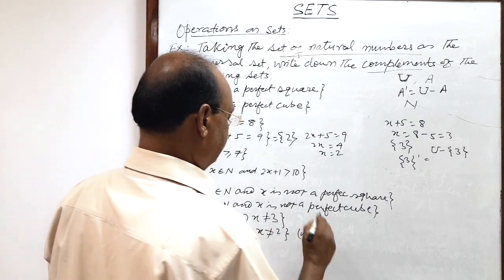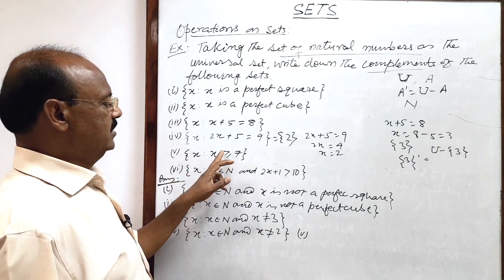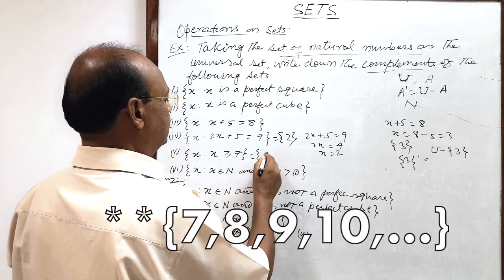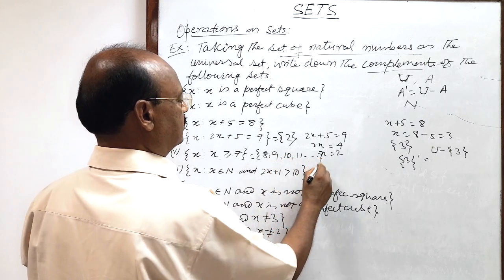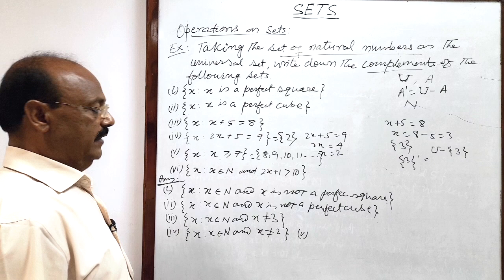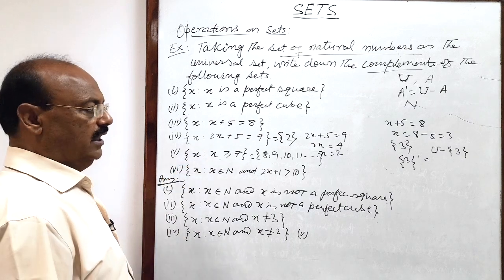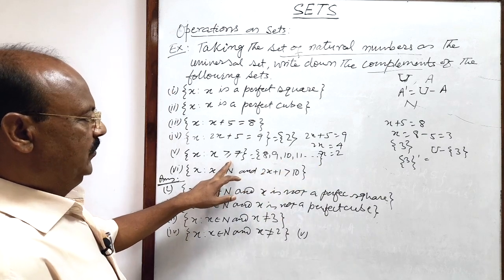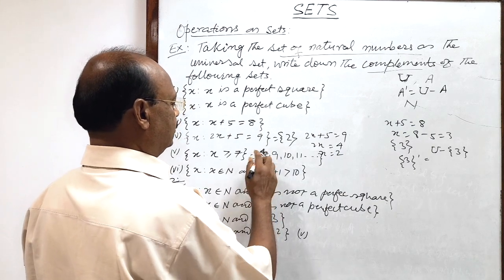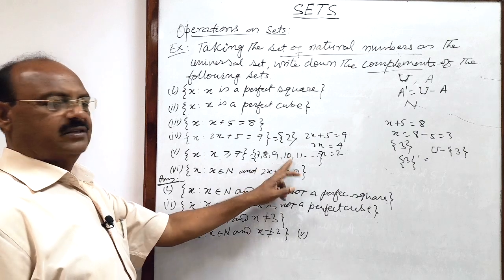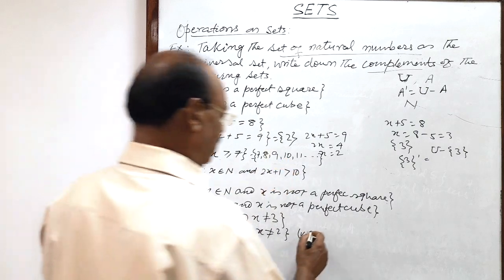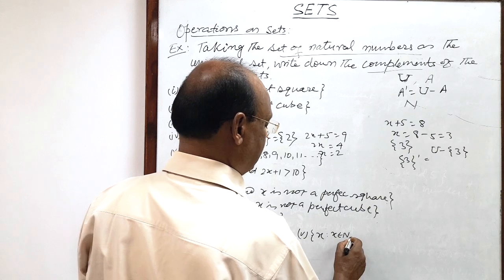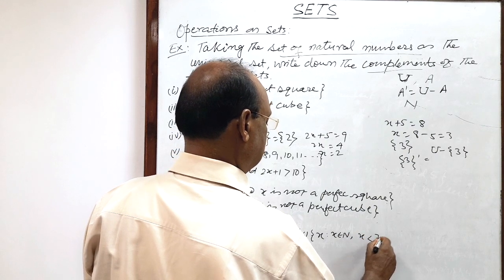Question number five: x such that x is greater than or equal to 7. The set we get is {7, 8, 9, 10, 11, ...} up to infinity. To find its complement, we delete all these elements from the universal set. Note that the equality sign is also here, so 7 is included in the set being removed. Therefore, all natural numbers smaller than 7 will be the complement. The answer is: x such that x belongs to the set of natural numbers and x is less than 7.